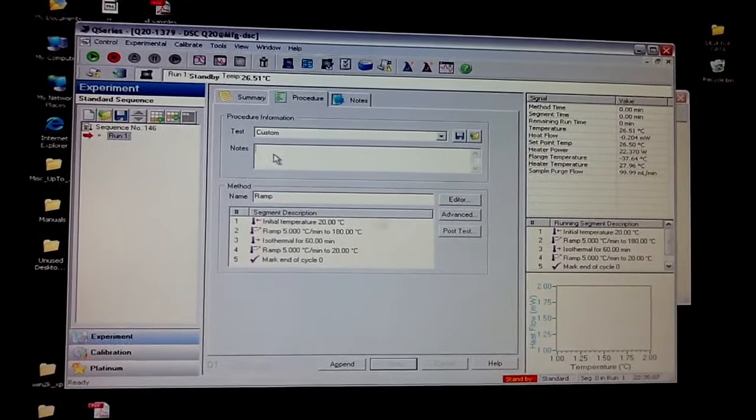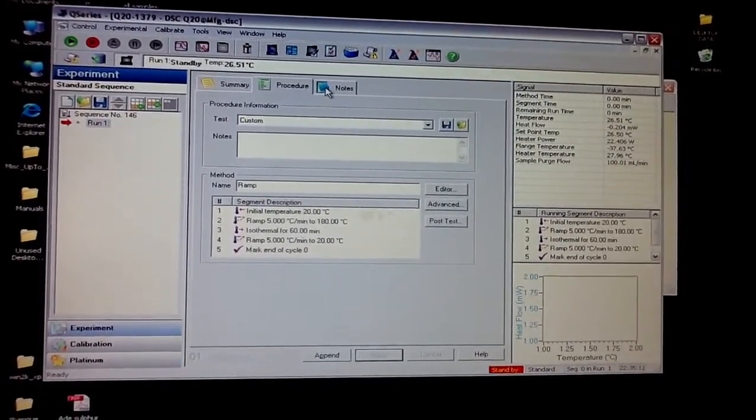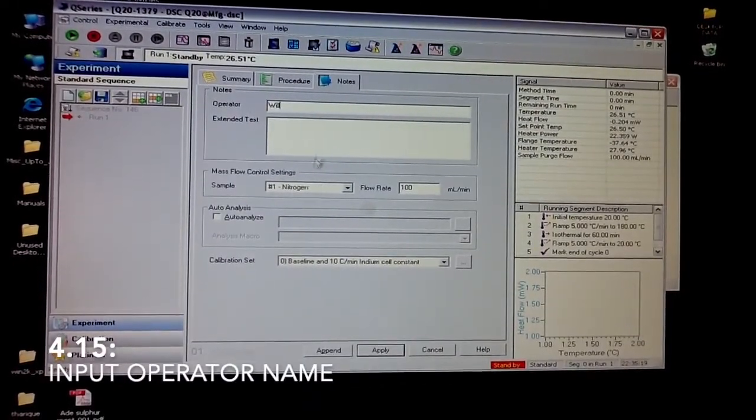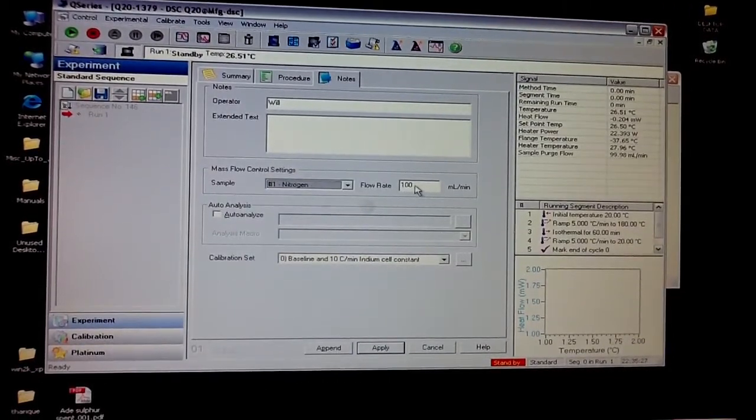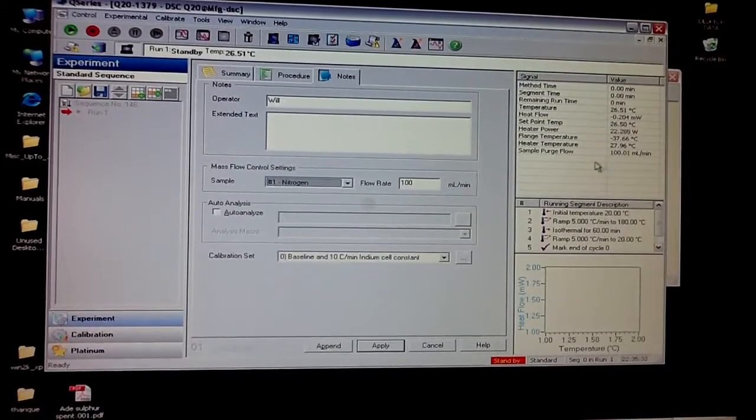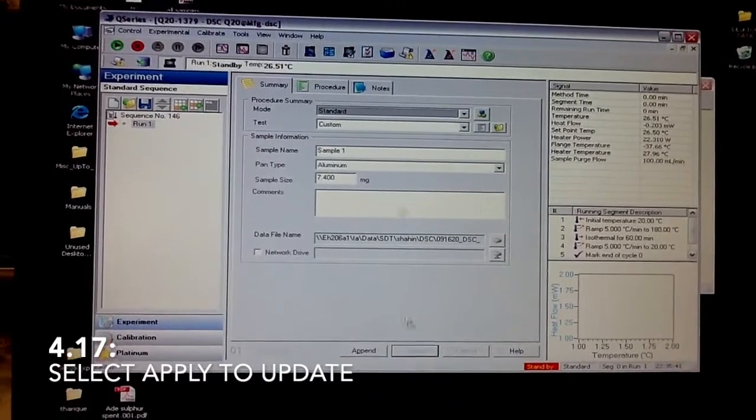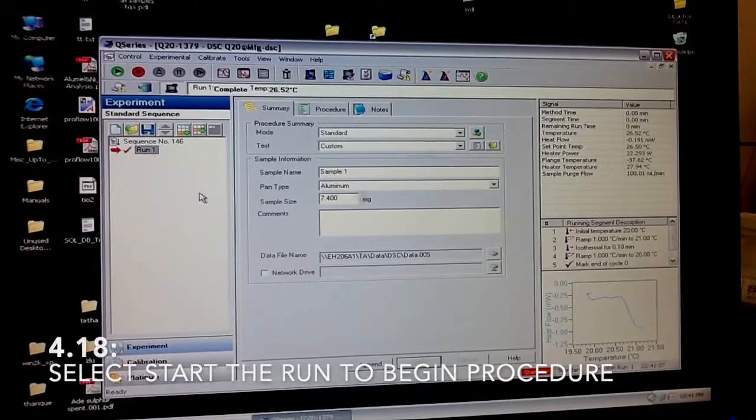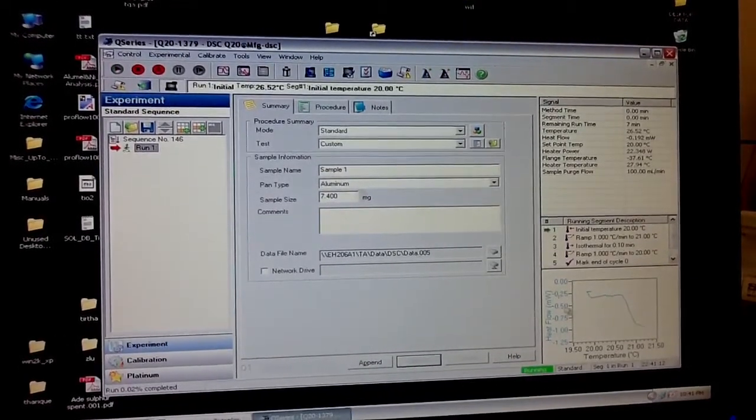You also can put in here a description of your test. And finally in Notes, you can put in the operator name. You can change this, but it should always be Nitrogen. And the flow rate should probably be 100 milliliters per minute. Well, you hit Apply. To start your test, you just head up here and hit Play. And it should show up here in the bottom right hand.